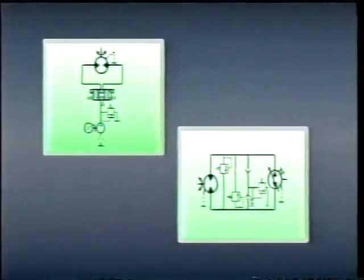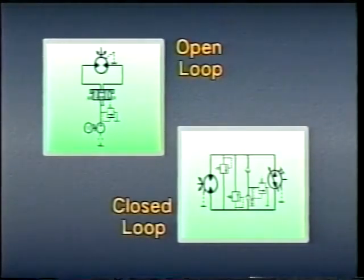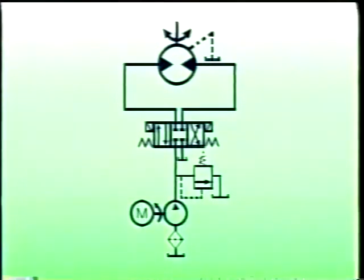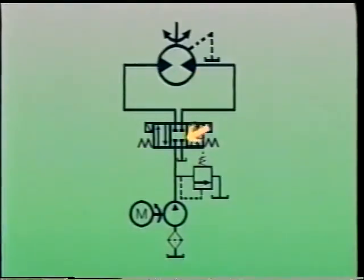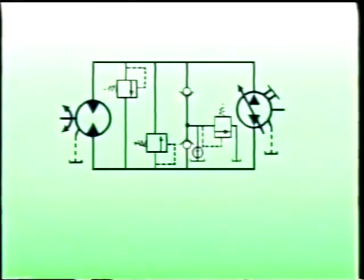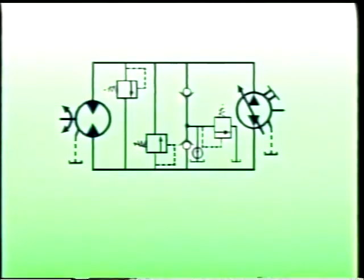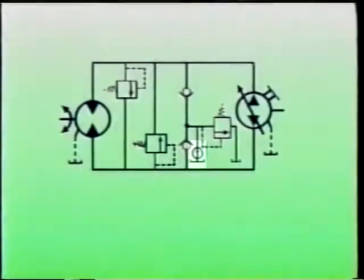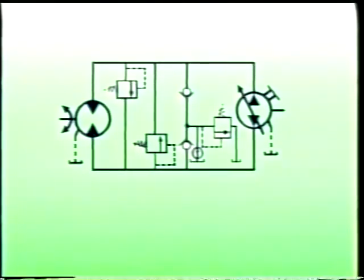Hydrostatic drives and hydrostatic transmissions can be either open loop or closed loop depending on how they are configured. An open loop system has the motor inlet connected to the pump outlet and the motor outlet connected to tank. In a closed loop, the motor outlet is connected back to the pump inlet, forming the closed loop. Any fluid leakage in a closed loop is made up by a replenishing pump. Since most of the fluid in closed loop drives and transmissions is carried in the system piping, only a small reservoir is required, allowing closed loop drives and transmissions to be very compact.